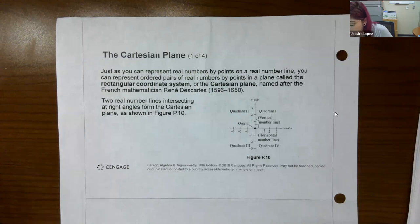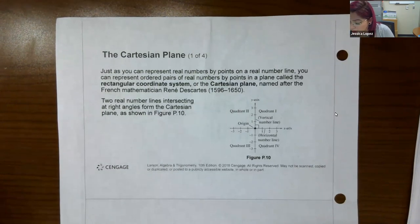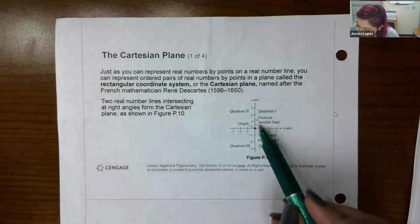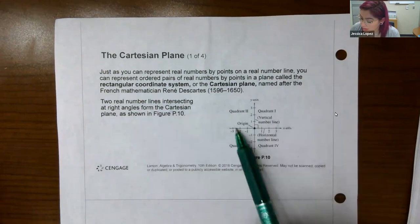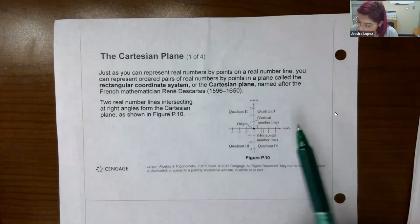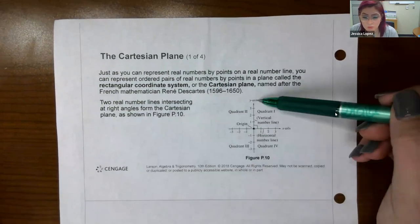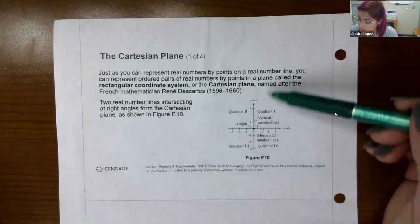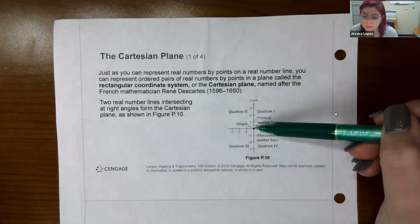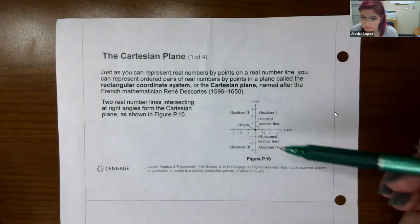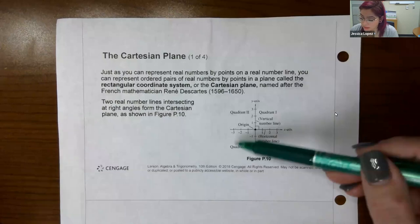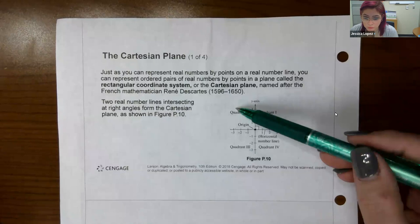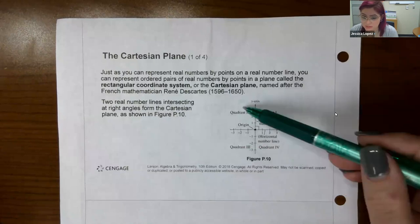It's named after French mathematician René Descartes. Two real number lines intersecting at right angles — here, here, here, and here — form the Cartesian plane. This number line is called the x-axis and this number line is called the y-axis. The x-axis and y-axis intersect in the middle at what's called the origin. When you create these axes, you essentially turn the plane into four regions: quadrant one, quadrant two, quadrant three, and quadrant four. It goes counterclockwise, starting at the top right.